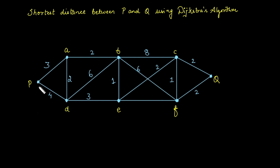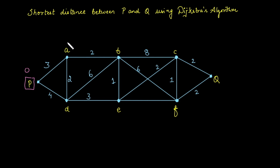First we will take the source vertex — let's take P as the source vertex. We will lock this vertex, and after locking it, the current cost is zero. At the same time, the cost for the rest of the vertices is infinity. After that, find the adjacent vertices of the source — that is A and D.